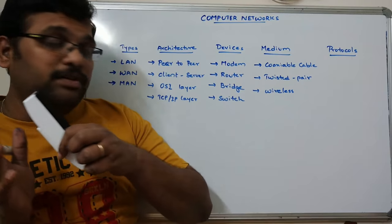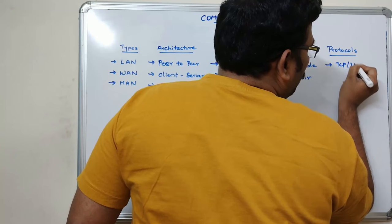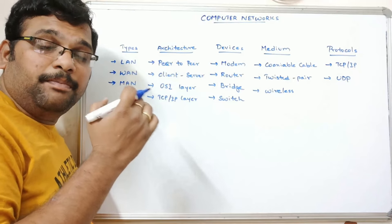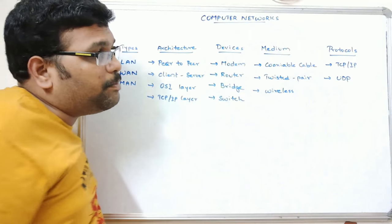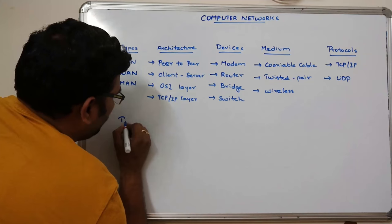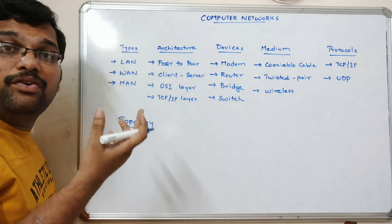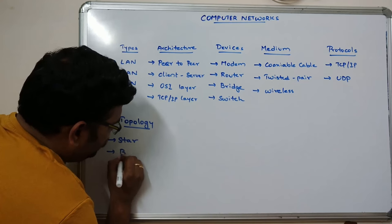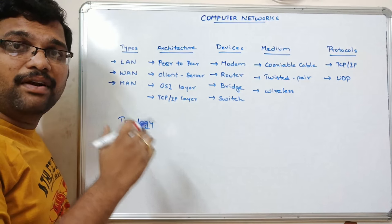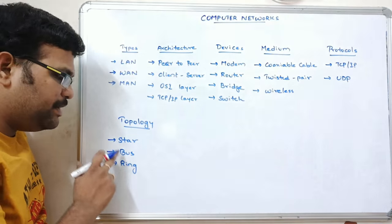Protocols: in order to share files from one system to another, we have to follow some protocols. Here we will mainly follow the TCP/IP protocol as well as UDP protocol — connectionless protocols and connection-oriented protocols. Before transmitting or sending files from one computer to another, we use either TCP/IP or UDP protocol. This network also follows different topologies: star topology, bus topology, and ring topology.